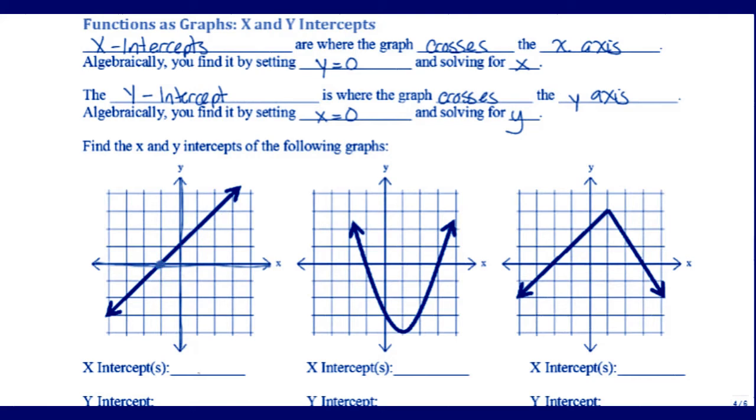Well, that happens at negative one. The ordered pair there is negative one comma zero. On my y-axis, my y-intercept is right here at zero comma one.